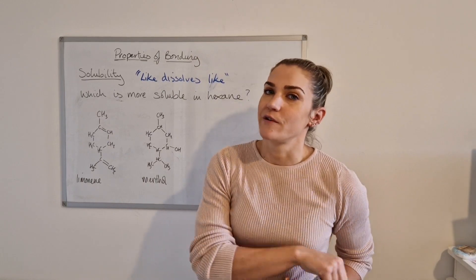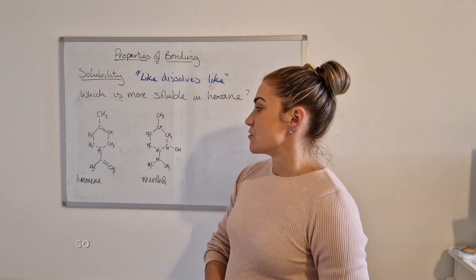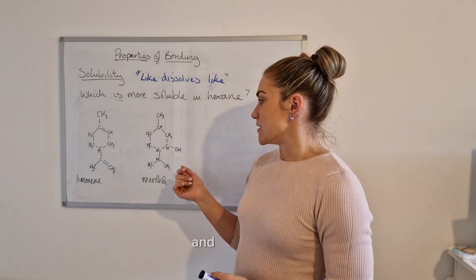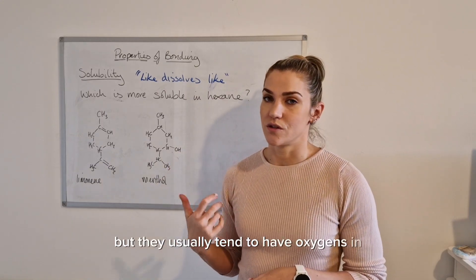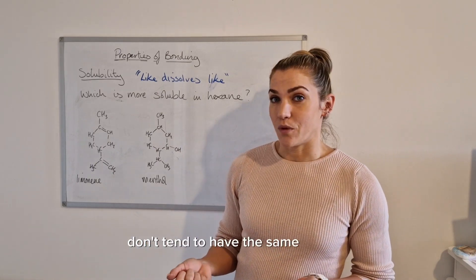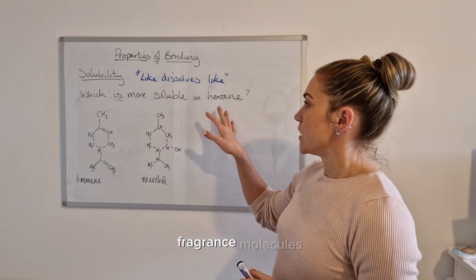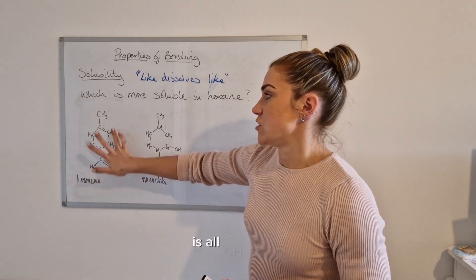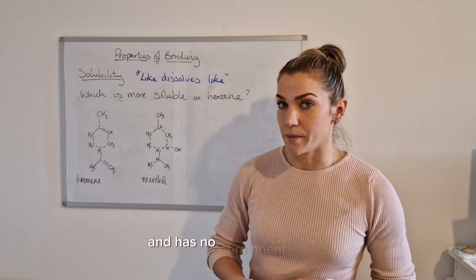For this next comparison, we're going to make some use of some unit two knowledge again and look at some terpenes and terpenoids. So terpenes are molecules made up of isoprene units, which you would learn about in unit two. And terpenoids are a very close relative of terpenes, but they usually tend to have oxygens in them instead. So what that means then is they don't tend to have the same polarity. So this time we're going to look to see which of these two fragrance molecules is most soluble in hexane. So limonene is all CH atoms, so it's a hydrocarbon, which means that it is non-polar and it has no permanent dipole.